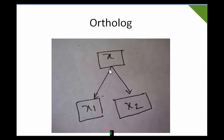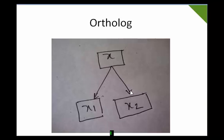This division of the same gene into different species is called ortholog. The new species contain the same gene, but the new species are different from each other. Suppose one is a bacteria, one is a fungi, and one is a yeast — the same gene is divided across different species, and that is called ortholog.